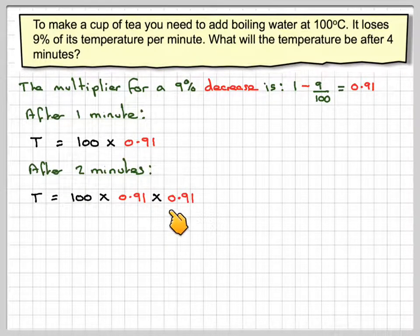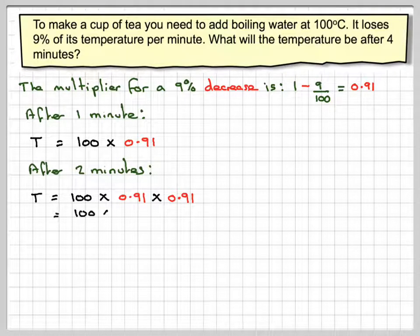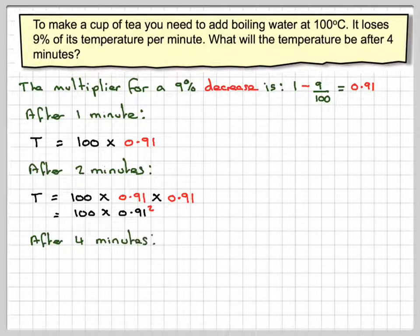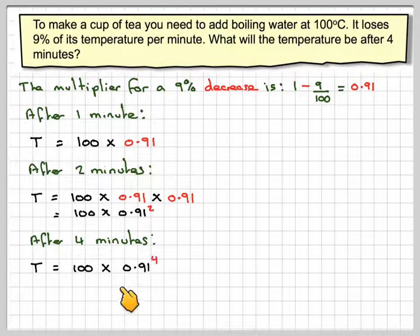This is a compound percentage decrease. So this is going to be 100 times 0.91 squared. And therefore after four minutes we can work out that the temperature will be 100 times 0.91 to the power of four.